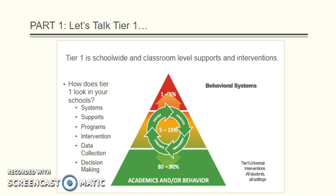As seen in the pyramid, 80-90% of the students campus-wide should be successful with strong Tier 1 supports. The remaining 10-20% should be considered for Tier 2 interventions.